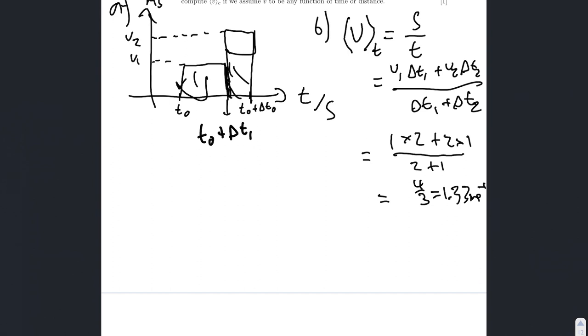Ok, so now part c. We have now draw the graph of v versus distance s. Using numerical values for speeds and times given in section b. And label the axis as before.